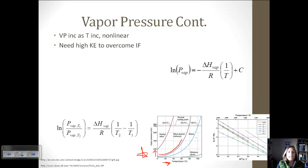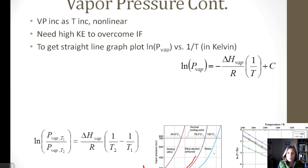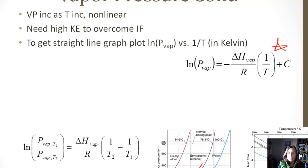We need a large kinetic energy, which remember is related to temperature, to overcome these strong intermolecular forces. And to get a straight line, we have to plot natural log of the vapor pressure versus one over the temperature, and that is what we're doing in this equation. Let me point out that this is the slope, because we're going to want to know that in a few minutes.